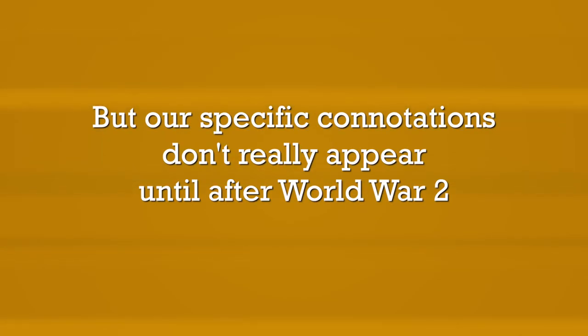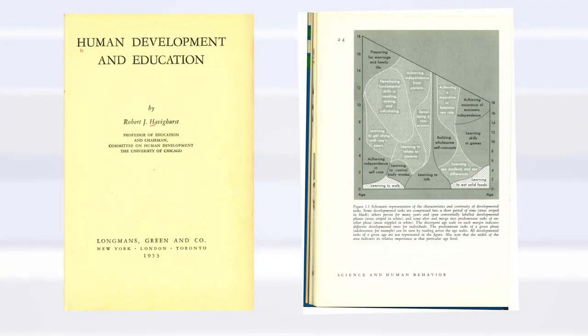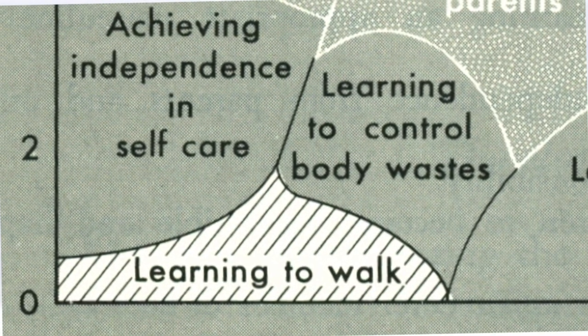Homo sapiens have likely been thinking about the human life cycle since the beginning, and classical scholars could tell us something about how ancient Sumerians, Greeks, or Chinese thought about something akin to human development. But our specific connotations don't really appear until after World War II, with textbooks like this one — Human Development and Education by Robert J. Havinghurst — which began breaking down human development into discrete developmental tasks that we accomplish at various ages.